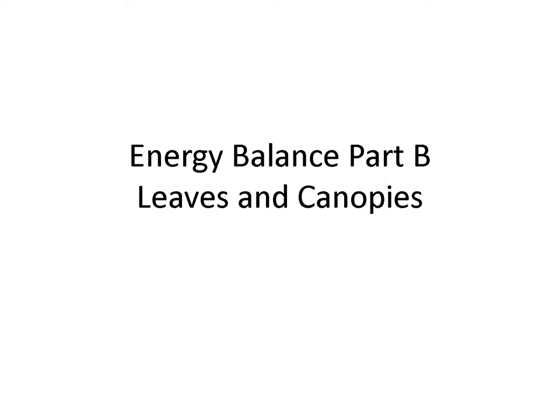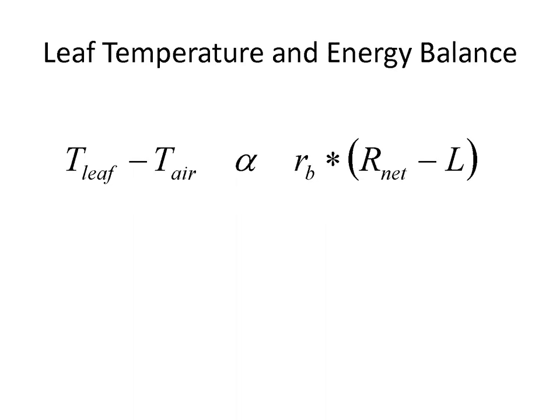Welcome to the second part of the tree biology energy balance lecture. In this lecture we'll focus on what attributes of leaves and canopies influence the size and magnitude of the radiation inputs and outputs. This equation is a simplification of the energy balance of a leaf that helps us understand the main controls over leaf energy balance.